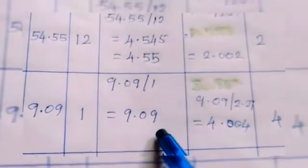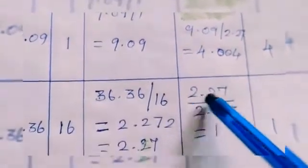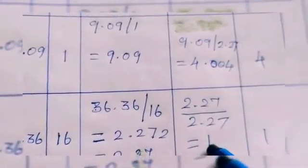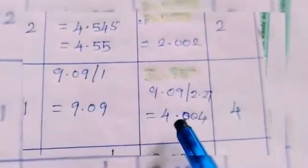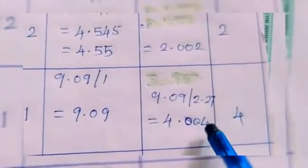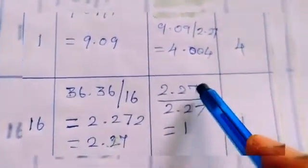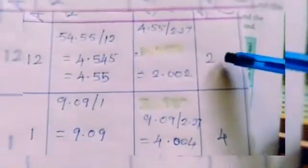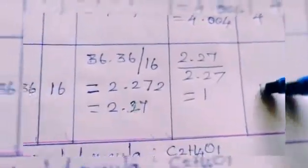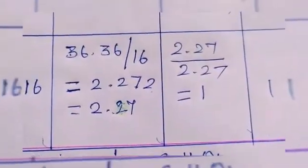We divide all values by the smallest number 2.27: carbon = 4.55÷2.27 ≈ 2, hydrogen = 9.09÷2.27 ≈ 4, oxygen = 2.27÷2.27 = 1. We get whole numbers 2, 4, and 1. The empirical formula is C2H4O, with 2 carbons, 4 hydrogens, and 1 oxygen.